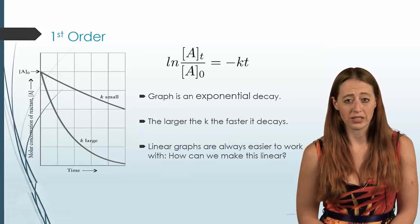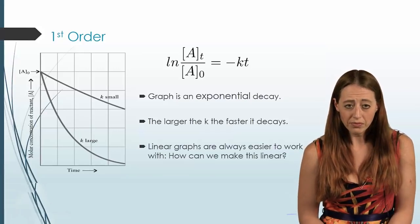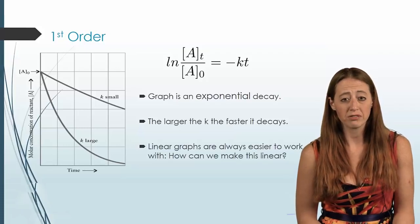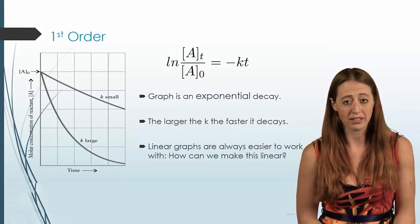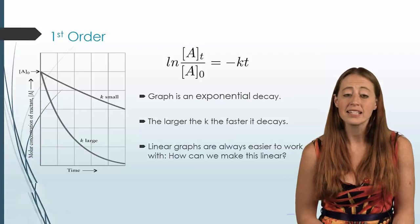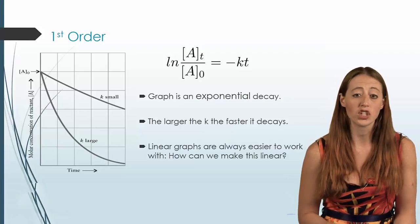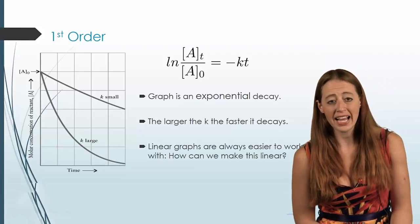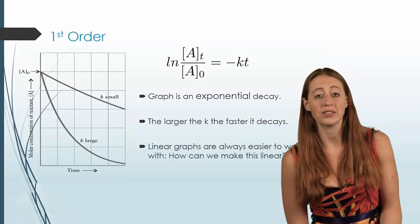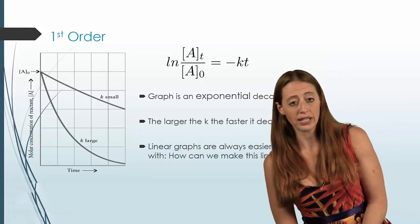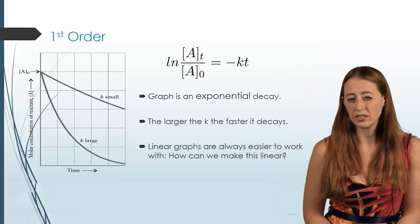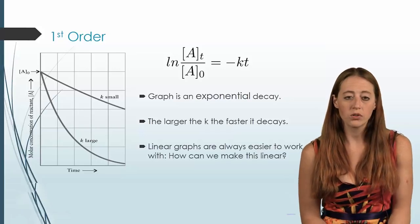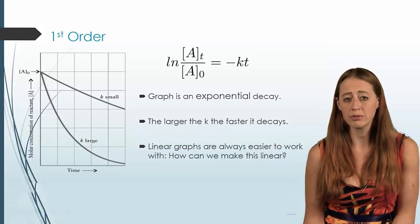So for first order, we have a very different looking rate law. That's because our first order rate law is: rate equals k times the concentration of A. The last one, we didn't have the concentration of A in the rate law, and so our integrated rate law was much simpler.